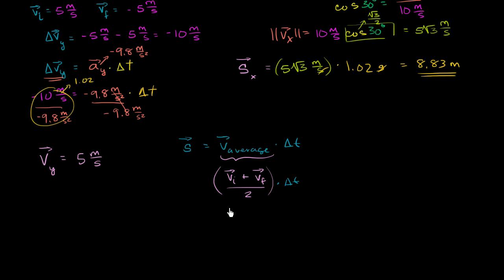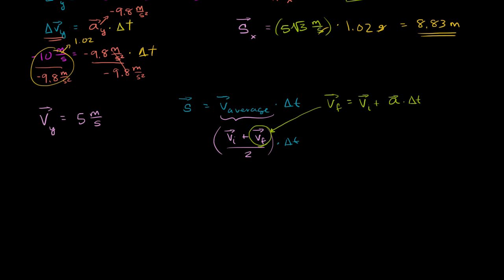What is our final velocity going to be? Our final velocity is the same as our initial velocity plus your acceleration times how much time has passed. So let's substitute that back in. Our average velocity is now our initial velocity plus our final velocity, where the final velocity is initial velocity plus acceleration times time elapsed, all divided by 2, and all of this is multiplied by the change in time.